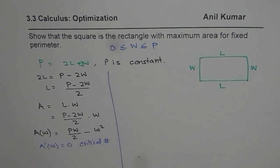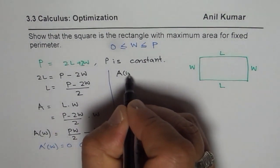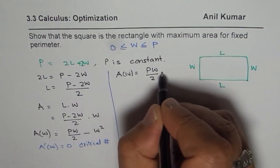So let us find the critical number now. So A, let us write A(W) equals PW over 2, where P is constant, minus W square.